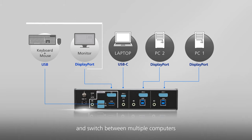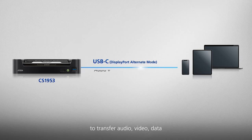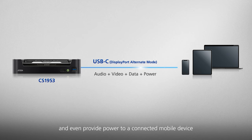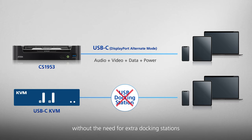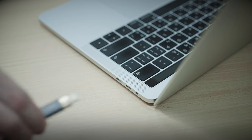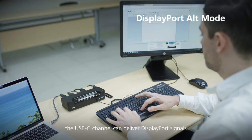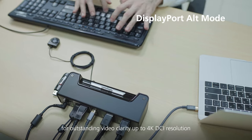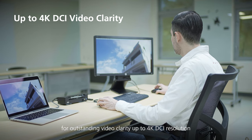Take advantage of the CS1953's USB-C functionality to transfer audio, video, data, and even provide power to a connected mobile device — all through a single cable, without the need for extra docking stations. With support for DisplayPort Alternate Mode, the USB-C channel can deliver DisplayPort signals for outstanding video clarity up to 4K DCI resolution.